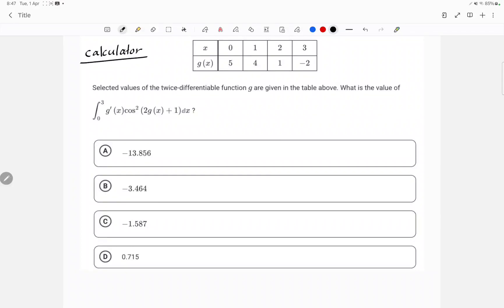Here we have a graphing calculator question where I'm given a table. I'm supposed to be integrating from 0 to 3, and I have this very weird expression here which is rare to come by. Whenever you see this weird expression, it's basically because you probably have a u-term here, and there is the derivative of the u-term somewhere in there as well.